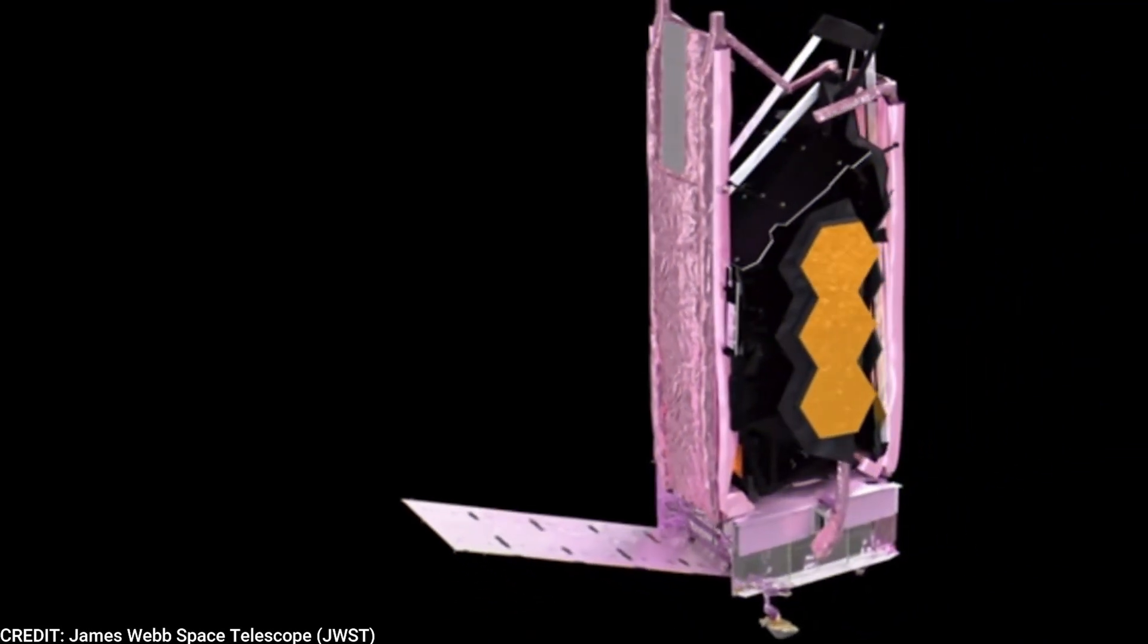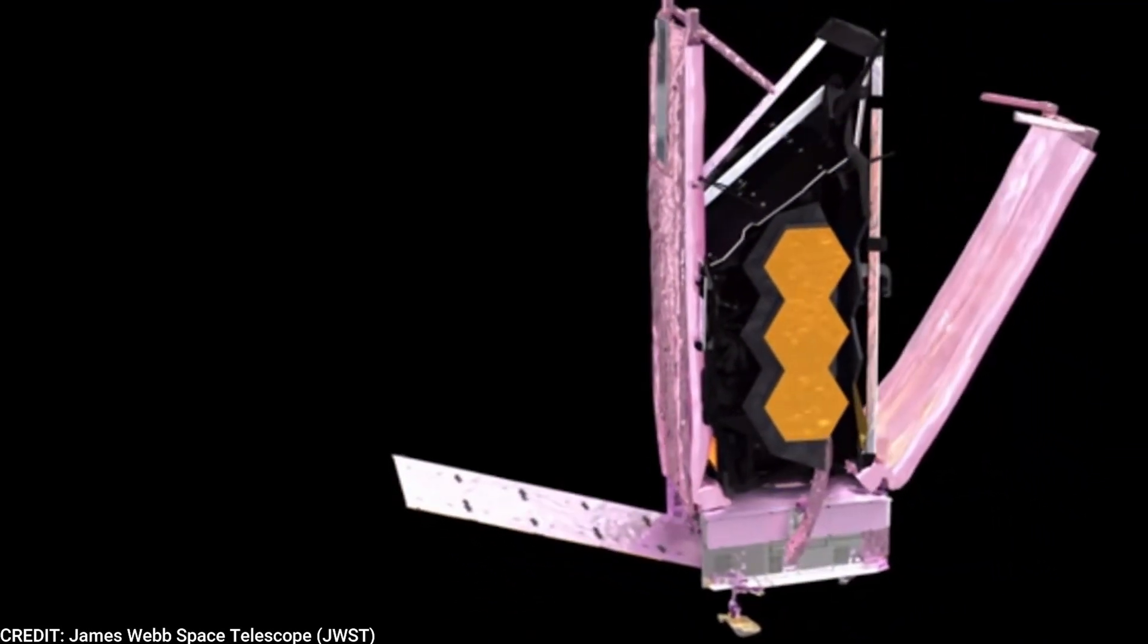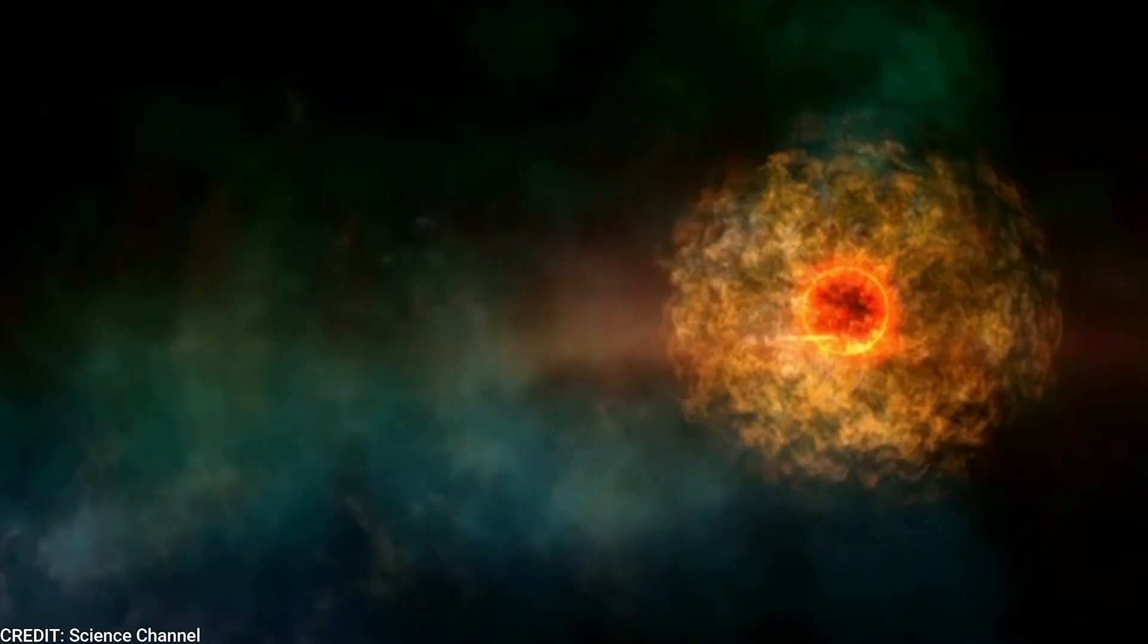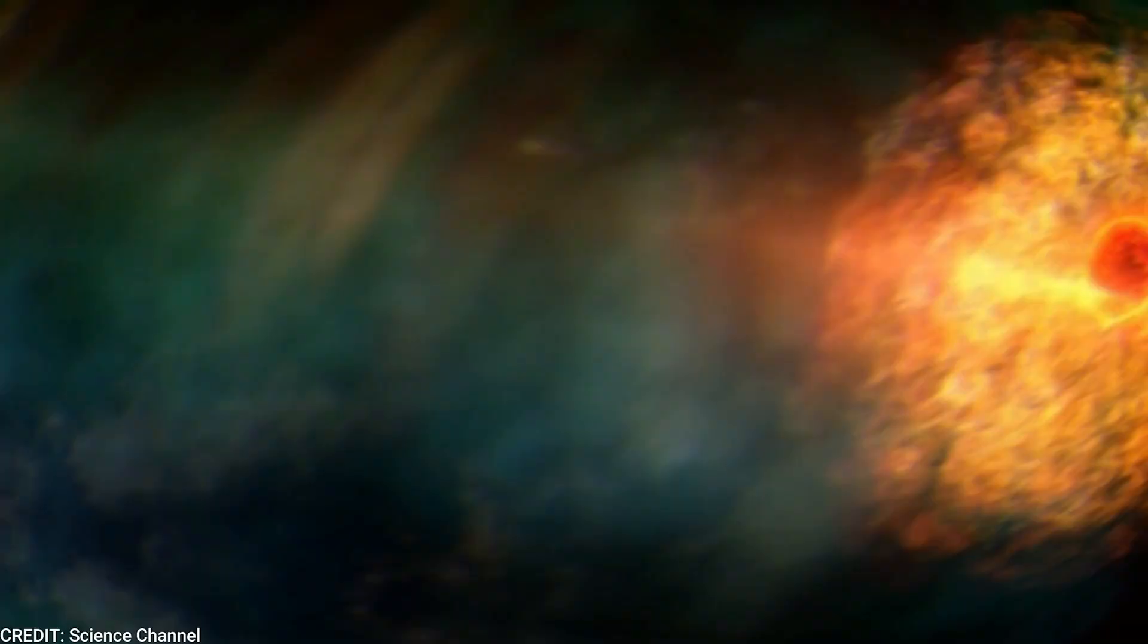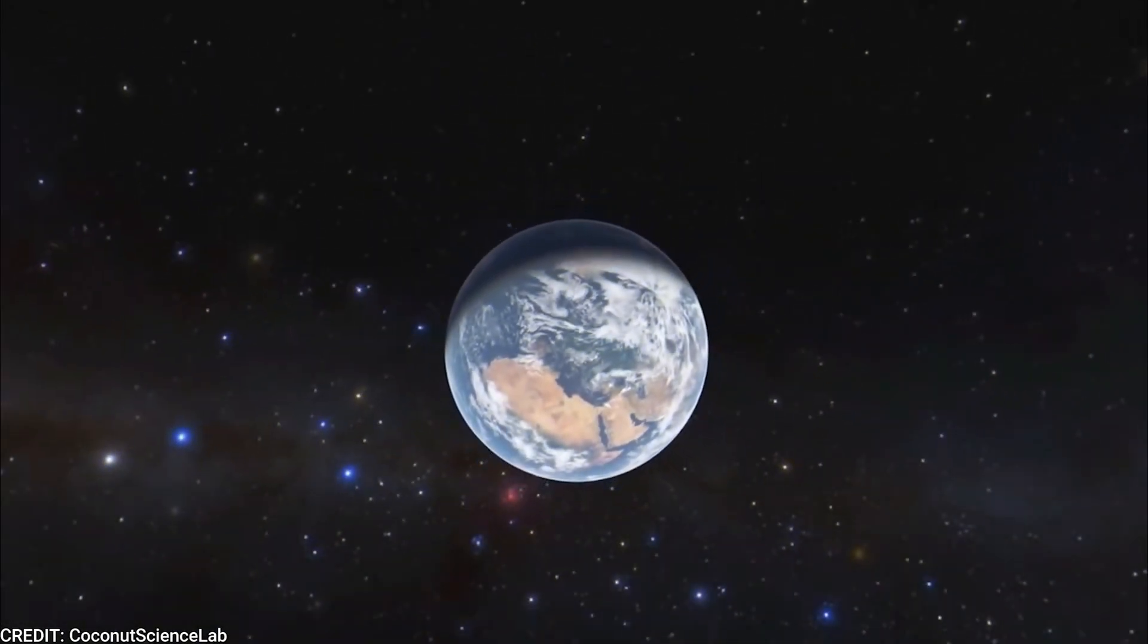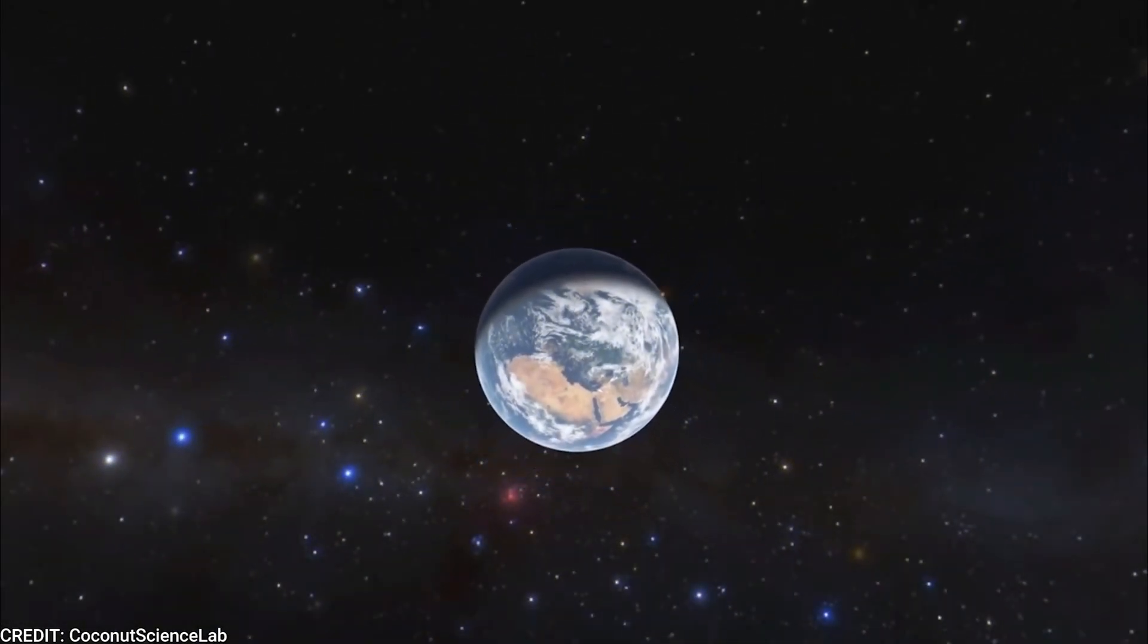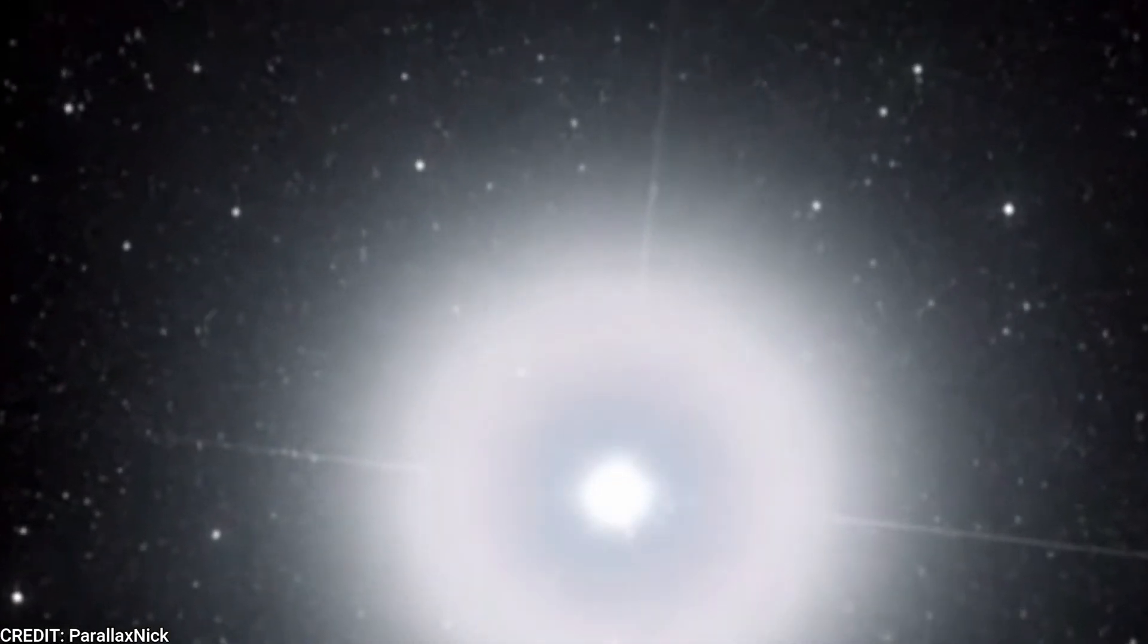A few months later, they had limited the most plausible explanations down to two: either a temporary cold area on the star's southern surface, similar to a sunspot, or a clump of dust that was causing the star to seem dimmer to viewers on Earth.